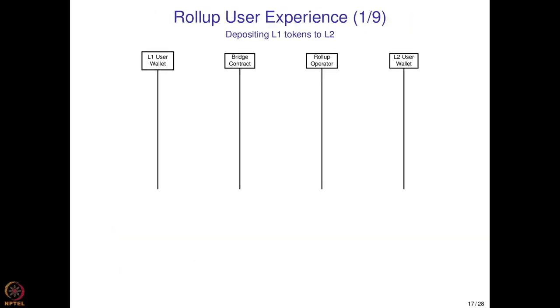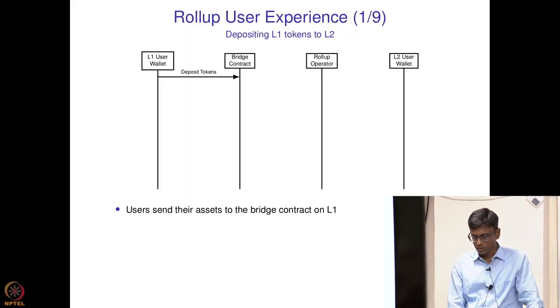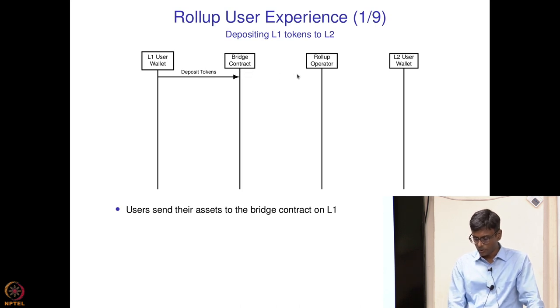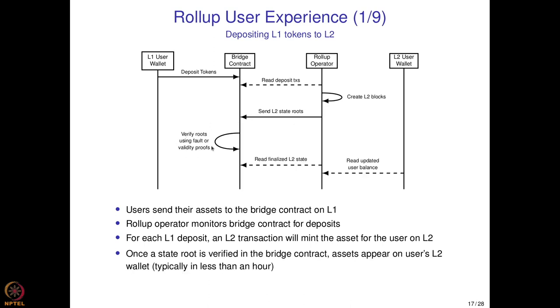The software for generating intermediate state roots would have to be provided by the rollup operator. Regarding the rollup user experience: before you can transact on layer 2 you need some ether on layer 2 to pay fees, since layer 2 is a separate blockchain that also has fees to prevent spam. So the first step is always depositing layer 1 tokens to layer 2 via the bridge contract — for example, Optimism's bridge contract holds around 45,000 ether.